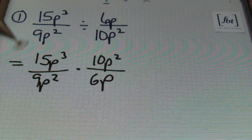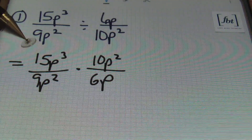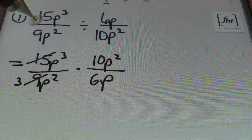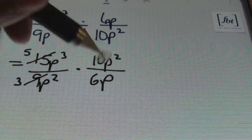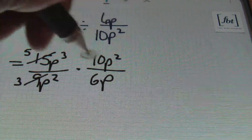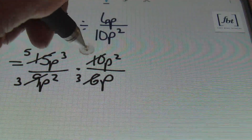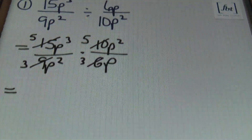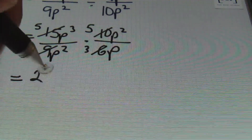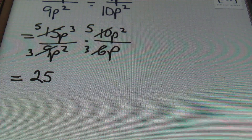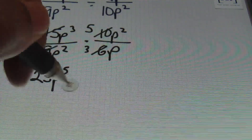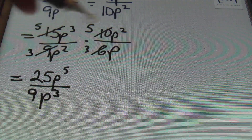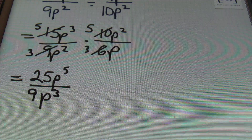From here we're going to simplify before we multiply. I prefer to attack the numbers first. 9 and 15 can be reduced by 3: 3 goes into 9 three times, 3 goes into 15 five times. The 10 and 6 can be reduced by 2: 2 goes into 6 three times, 2 goes into 10 five times. Then multiplying straight across: 5 times 5 gives me 25, and multiplying the like bases of p — p to the third power times p squared gives me p to the fifth power — all over 3 times 3 which is 9, and p squared times p to the first power gives p to the third power. You add the exponents on those like bases when multiplying.